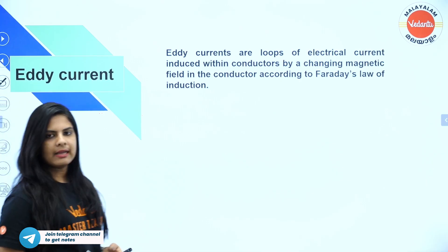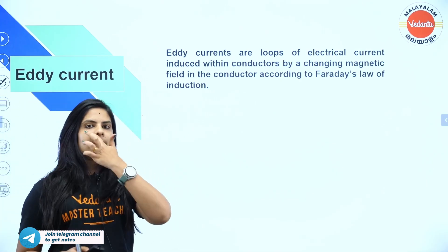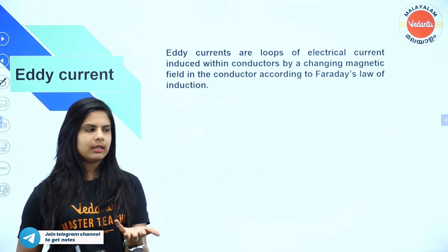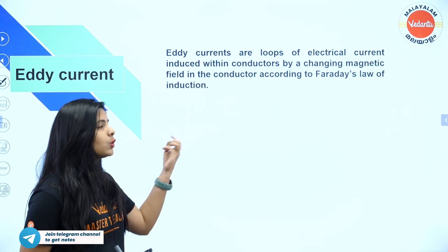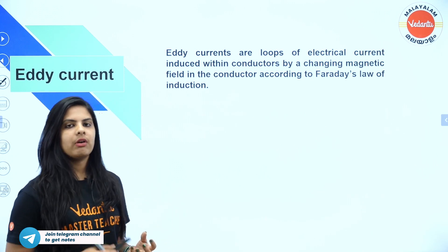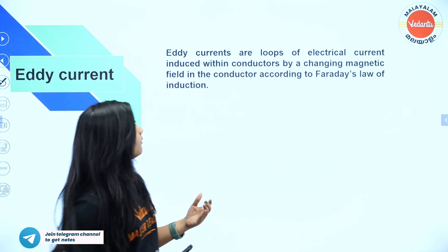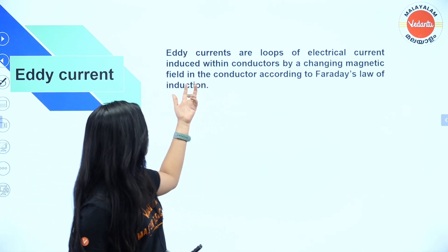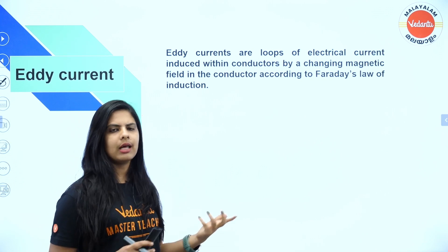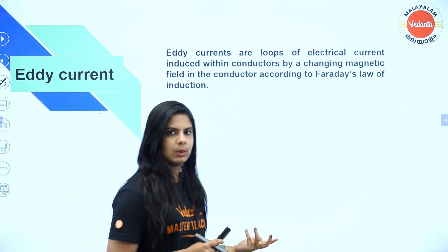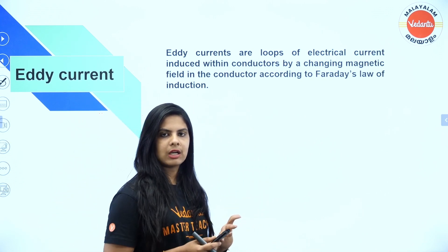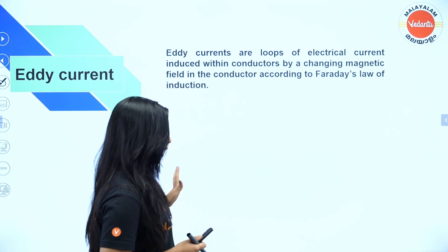Next one is eddy current. Eddy current is essentially useless or unwanted current. It is caused by changes in the magnetic field. An example of its application is electromagnetic train brakes.